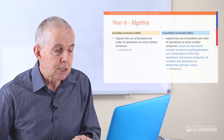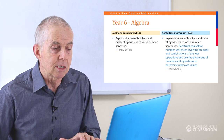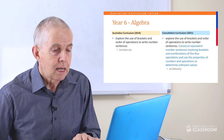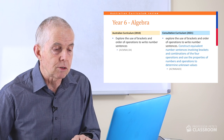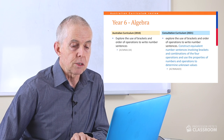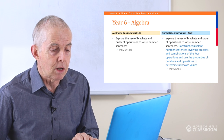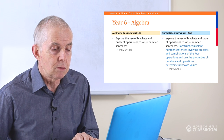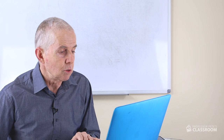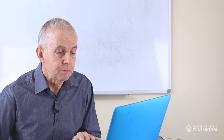Number three says: explore the use of brackets in order of operations to write number sentences — taken straight from the previous curriculum — and then added to that is construct equivalent number sentences involving brackets and combinations of the four operations and use the properties of numbers and operations to determine unknown answers. That's great; there's a lot more detail in this and I think they've done a good job.